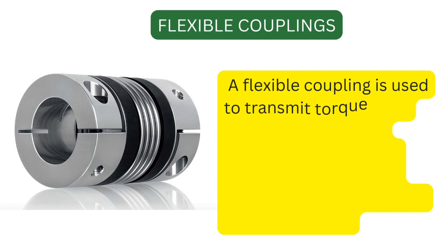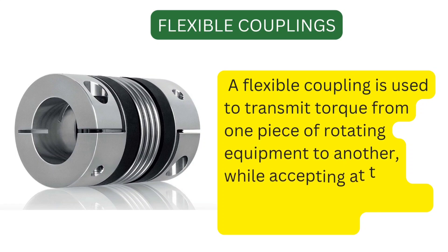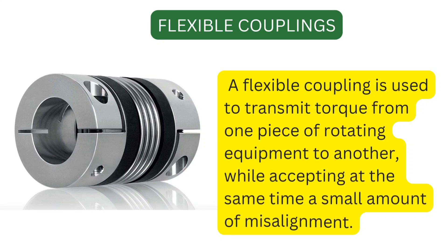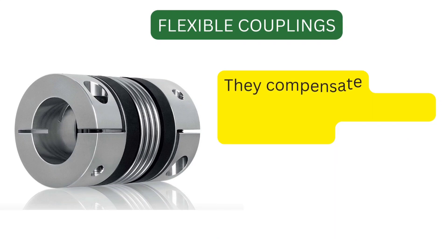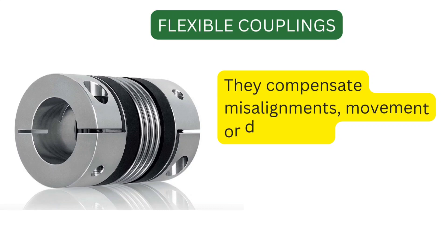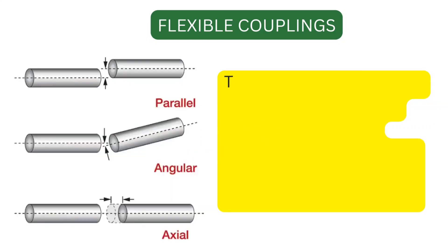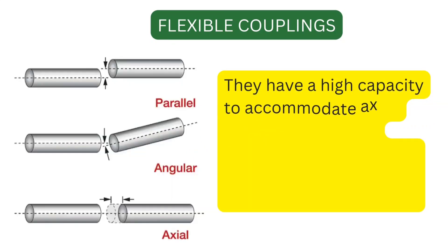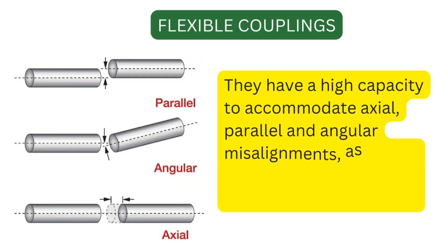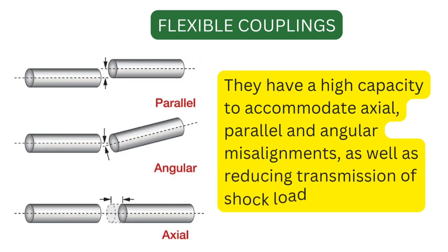Flexible couplings. A flexible coupling is used to transmit torque from one piece of rotating equipment to another, while accepting at the same time a small amount of misalignment. They compensate misalignments, movement, or deflection, and have a high capacity to accommodate axial, parallel, and angular misalignments, as well as reducing transmission of shock loads or vibration.